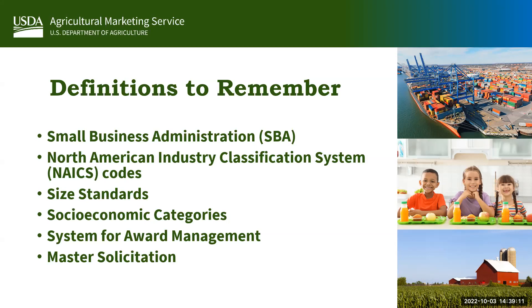Next is the North American Industry Classification System, or NAICS codes. NAICS codes are an economic classification system — you select the code that best depicts your primary business. Size standards define the largest size a business can be to participate in small business set-asides, and standards can either be the number of employees or the average annual receipts of a company. Socioeconomic categories are specific small business categories such as woman-owned, veteran-owned, service-disabled veteran-owned, HUBZones, 8(a) firms, and more.